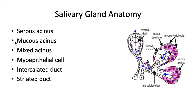The mucous acinus is going to produce a lipid-heavy, fatty type secretion. It contains only mucous cells, pictured in white here, and those cells are generally more tubular in shape, not as much spherical.